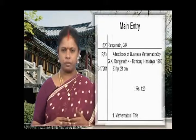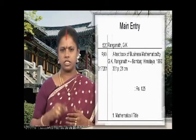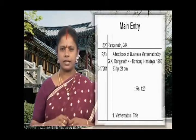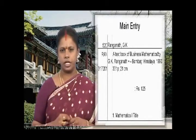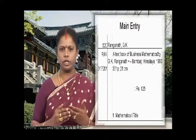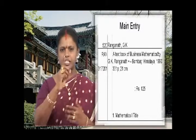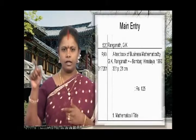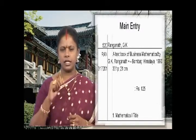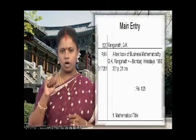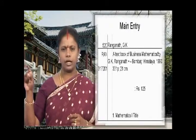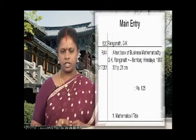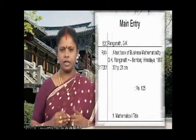The next element is place of publication, with connecting punctuation dot dash. This example has two places of publication given, so we always copy down only the first place. So: dot dash Bombay colon Himalaya Publishing, comma, followed by the year of publication.